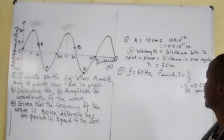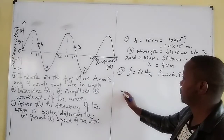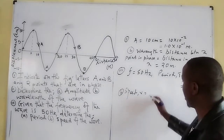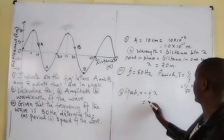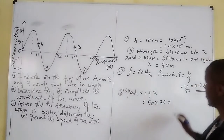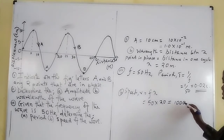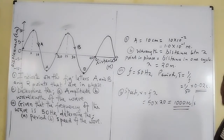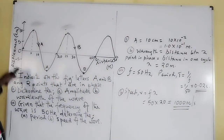Part 2: determine the speed of the wave. Speed V is given by V = f × λ. With frequency = 50 Hz and wavelength λ = 20 m, the wave speed is 50 × 20 = 1000 meters per second. That is how we interpret a displacement-distance graph.